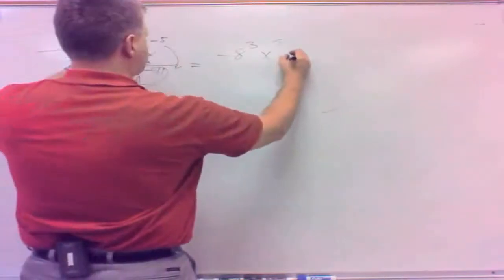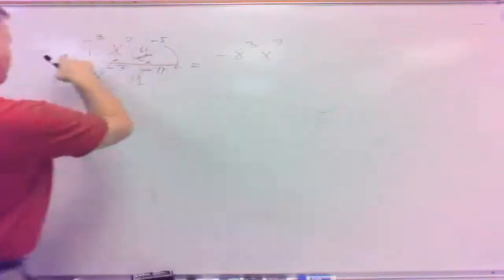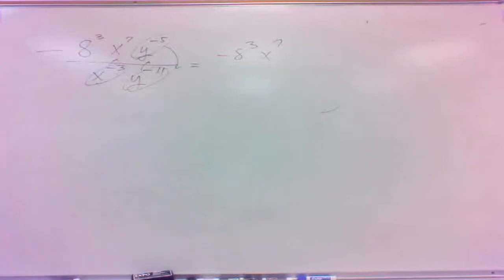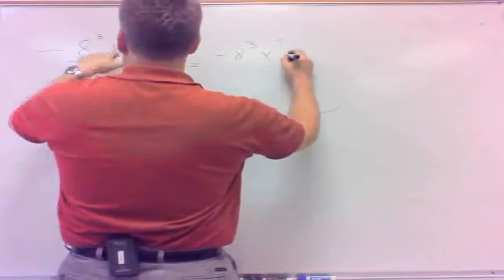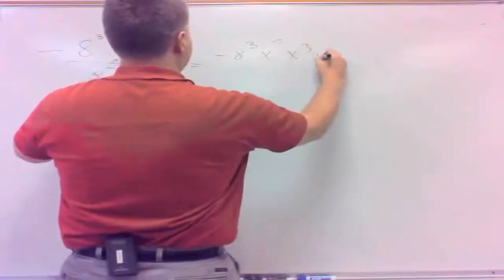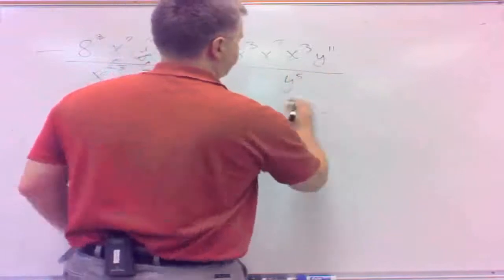So that'll make it, now the first one, I've got a negative 8 cubed. Does that move? That one wouldn't move, because we're only talking negative exponents that move. So the negative 8 cubed stays there. X to the 7th, so I have x cubed, y to the 11th, and then on the bottom, just y to the 5th.